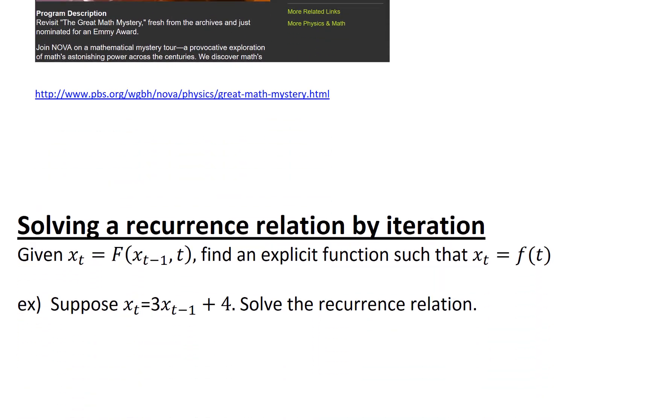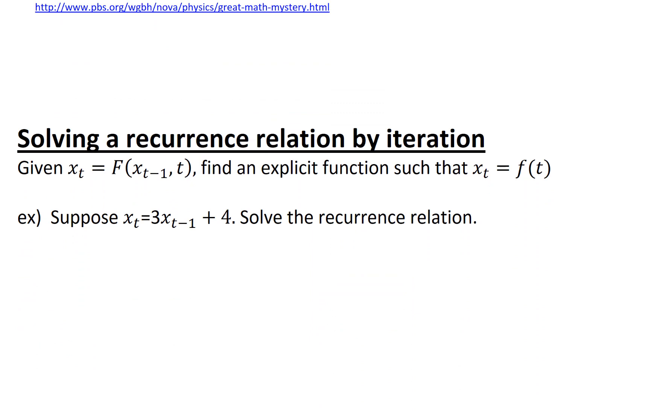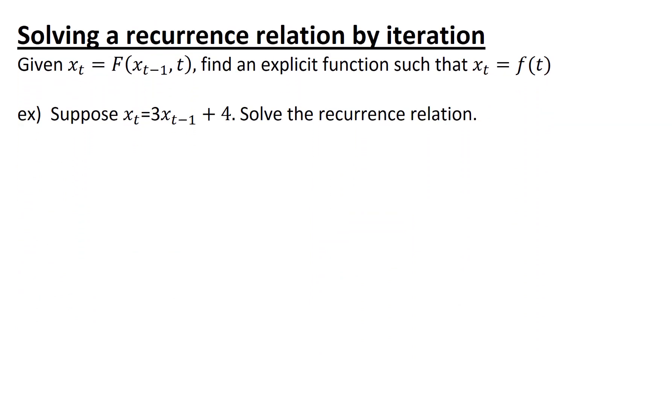The last thing we want to talk about in this video is how to solve a recurrence relation by iteration. There's many more methods for solving recurrence relations, but we're just going to talk about one method in this course called iteration. We're given a recurrence relation, x sub t equals some function of previous time steps, and maybe you've also got the variable t in there. We want to find an explicit function such that x sub t equals f of t.